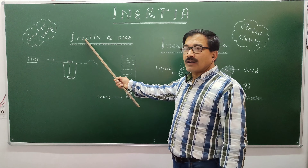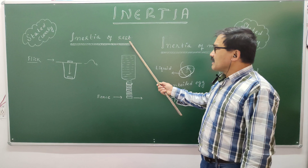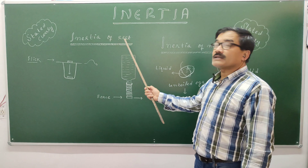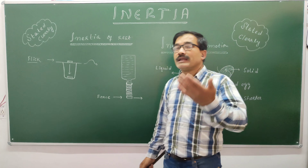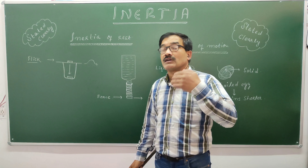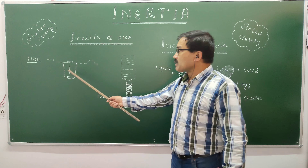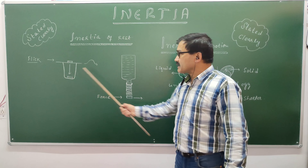The first type is called inertia of rest. It tells you that when an object is at rest, it will try to maintain its condition of rest. So today we are going to do two small activities.